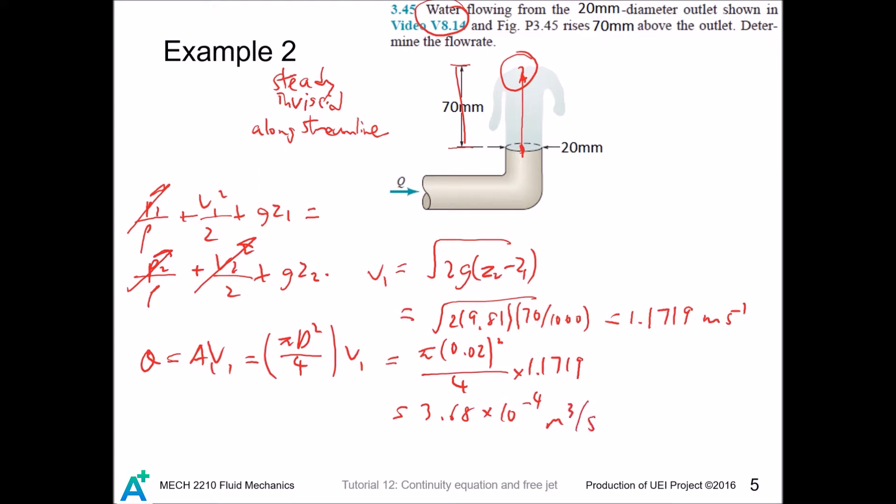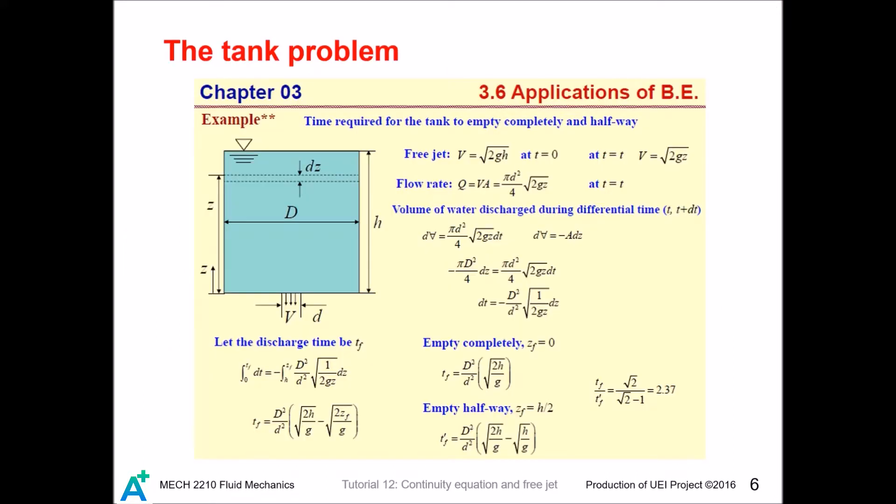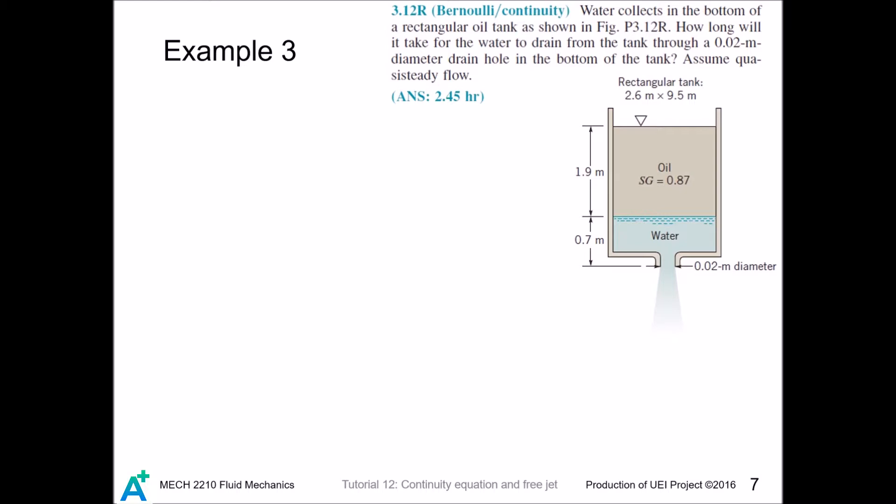The question asks for flow rate so we calculate Q = A*v1 = πd²/4 * v1. We plug in the values and we are done with this example. You've heard Professor Lee going through this example so I'm not repeating. This problem is really standard and his approach is illustrative, so I encourage you to try it yourself.